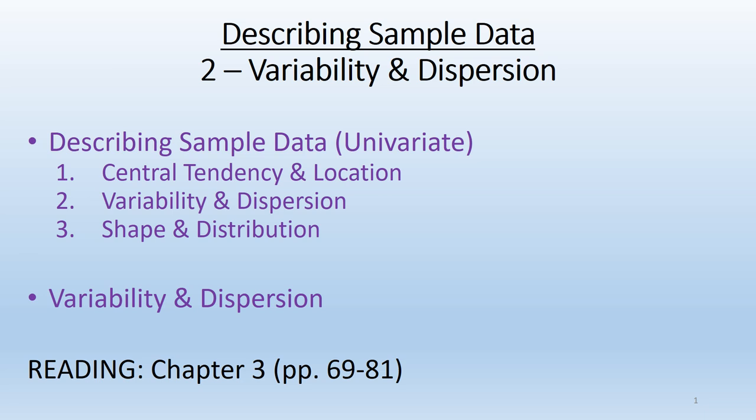But that's only one aspect of describing a particular variable. We want to know the most common or average point, but we also want to know a second characteristic: how spread out the variety of responses are for any particular variable. That's what we're going to focus on in this lecture — step two: variability and dispersion. Similar to our last lecture, we'll introduce the concept and then go through various statistics we can use to illustrate it.